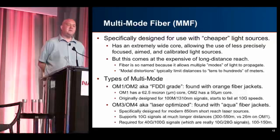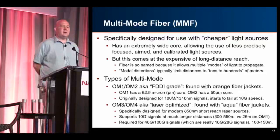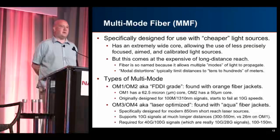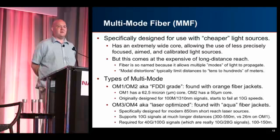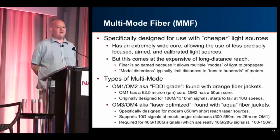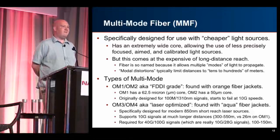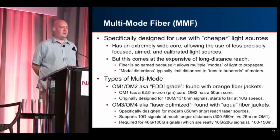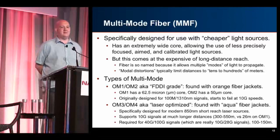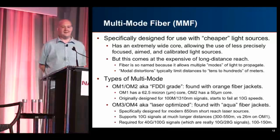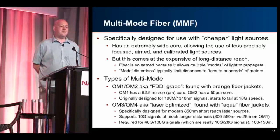There are two main types of classic multi-mode: OM1 and OM2. OM1 is the classic 62.5-micron core fiber, OM2 has a 50-micron core; they have very similar performance with OM2 slightly better. You'll find these with orange jackets. They were really designed for 100Mb signals at 1310nm. It really starts to become a problem at 10G speeds — you get distances of only around 26 meters, which doesn't really cross a cross-connect.